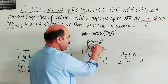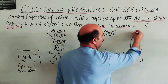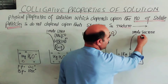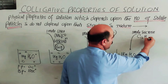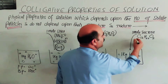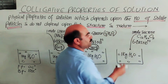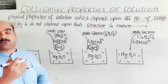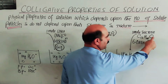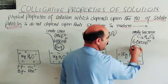So one mole of glucose is 180 grams. The third container has one mole of sucrose. The formula of sucrose is C12H22O11. One mole of sucrose also contains 6.023 × 10²³ molecules. The molecular mass of sucrose is 342 grams.